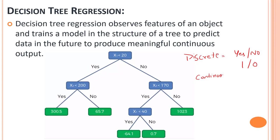Continuous values are different. For example, the problem statement might be: what will be the price of a product? Or consider the weight of a person — what will be the weight if his height is a certain value? The weight can be anywhere between 0 to 100, and within that range there can be numerous values like 55.845, 55.9, or 60.2. That is what we mean by continuous values.